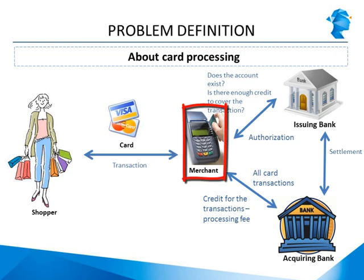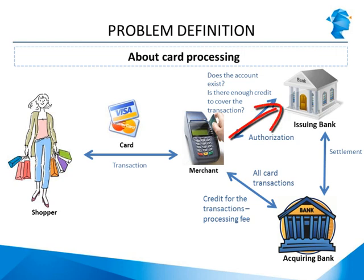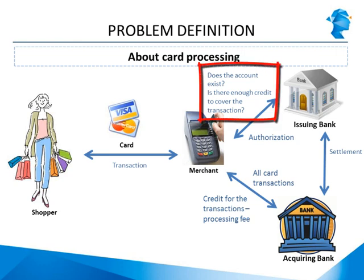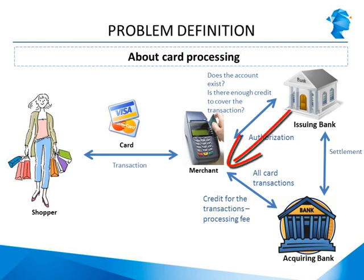When the seller swipes the credit card, an inquiry is raised with the issuing bank — the bank that issued the shopper's credit card. The seller is essentially sending an inquiry to the issuing bank asking if the account exists and if there is enough credit to cover the transaction. If the answer to both questions is yes, the seller receives authorization from the issuing bank.